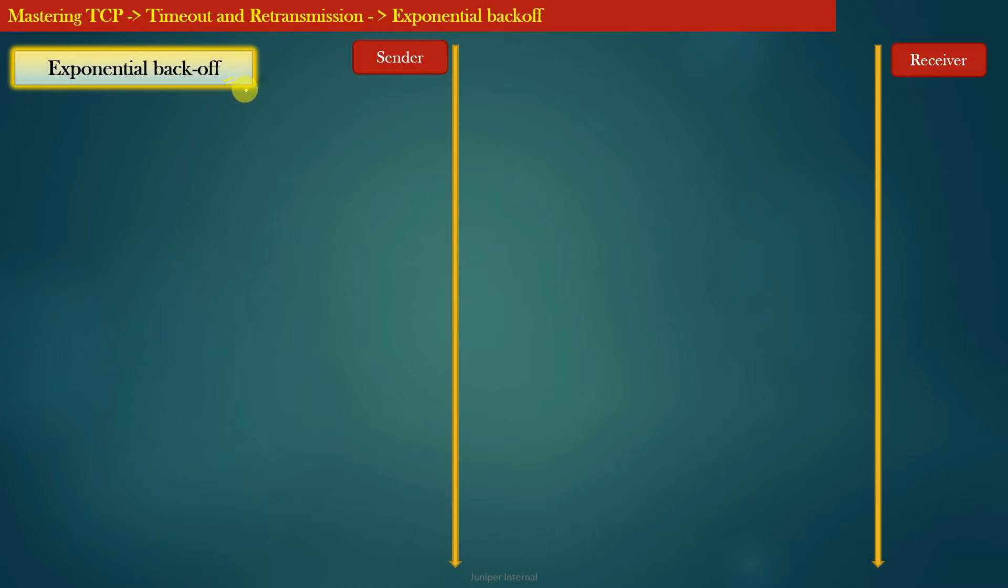You can see in the diagram on the right hand side we have a TCP sender and we have a TCP receiver. Let us suppose that the TCP sender sends a segment with sequence number K to the TCP receiver.